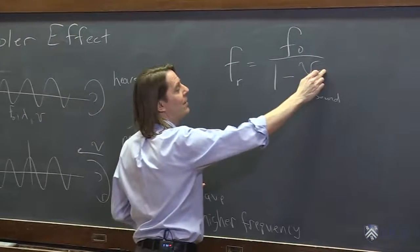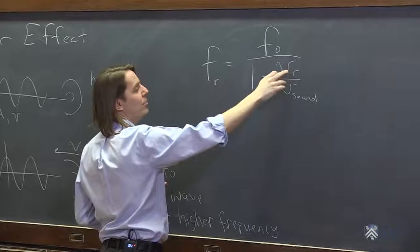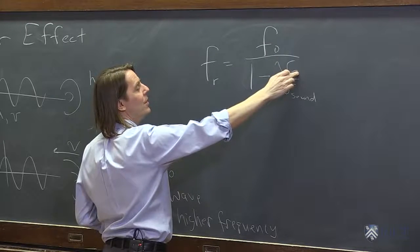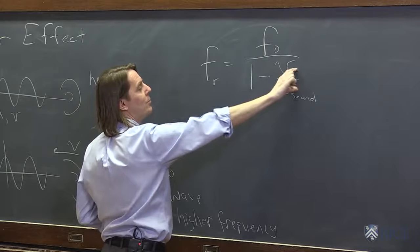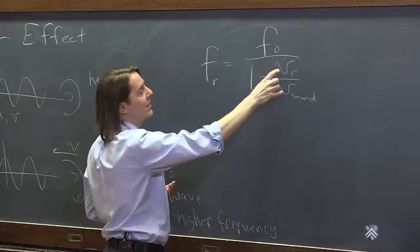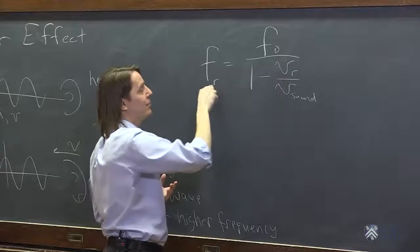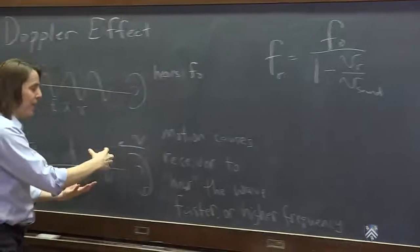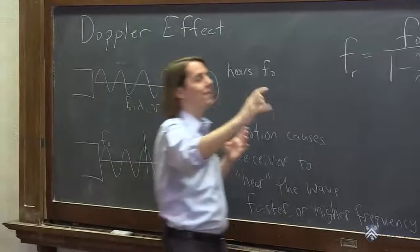If the train is coming at you, this is a positive number. Usually the speed of sound is pretty fast and the train's pretty slow, so this is a really small positive number. One minus a positive number is like 0.99. You divide by that, it makes the frequency higher. The ear hears the higher frequency.